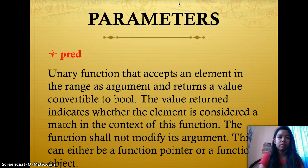Another parameter is pred, a unary function that accepts an element in the range as argument and returns a value convertible to bool. The value returned indicates whether the element is considered a match in the context of this function. The function shall not modify its argument. This can either be a function pointer or a function object.